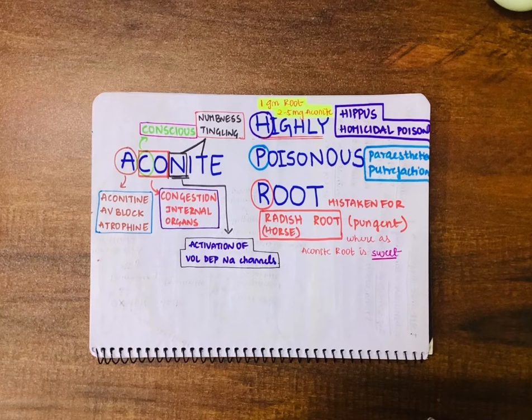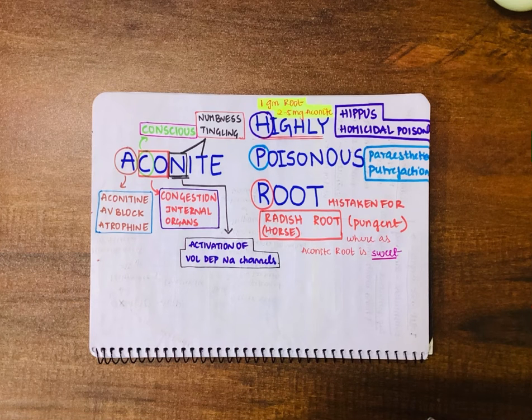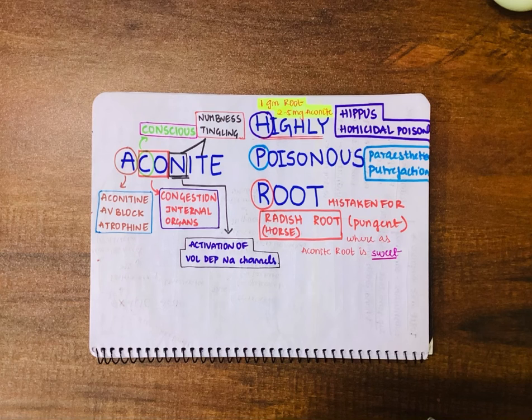Aconite is a highly poisonous fruit. Using this sentence, we can remember every important point about aconite poisoning. A stands for aconitin — aconitin is the active principle of aconite.